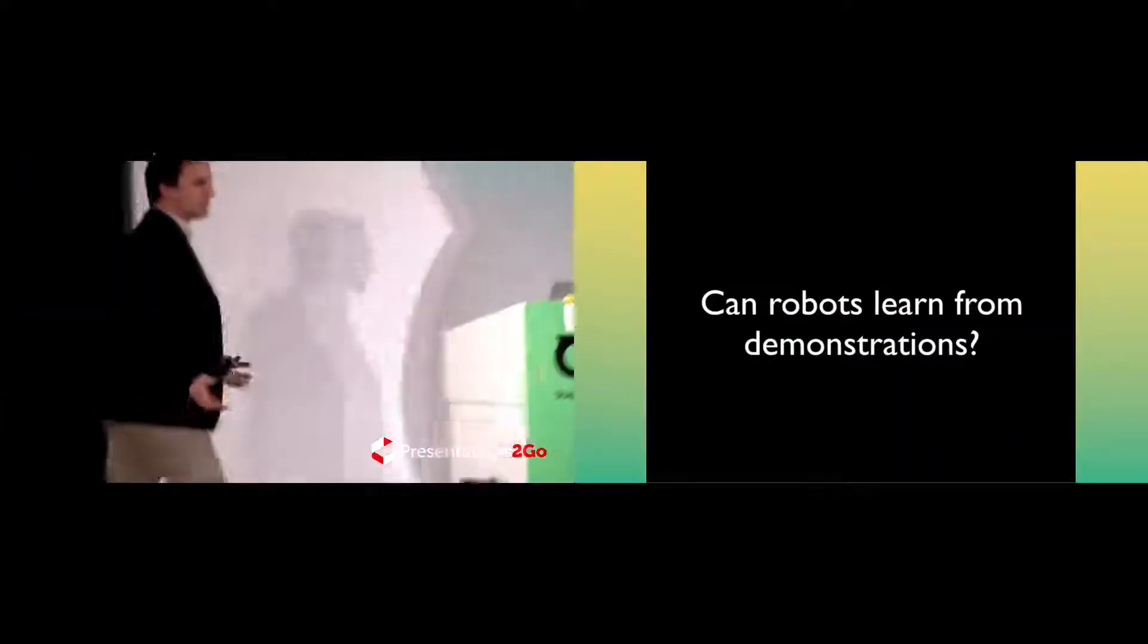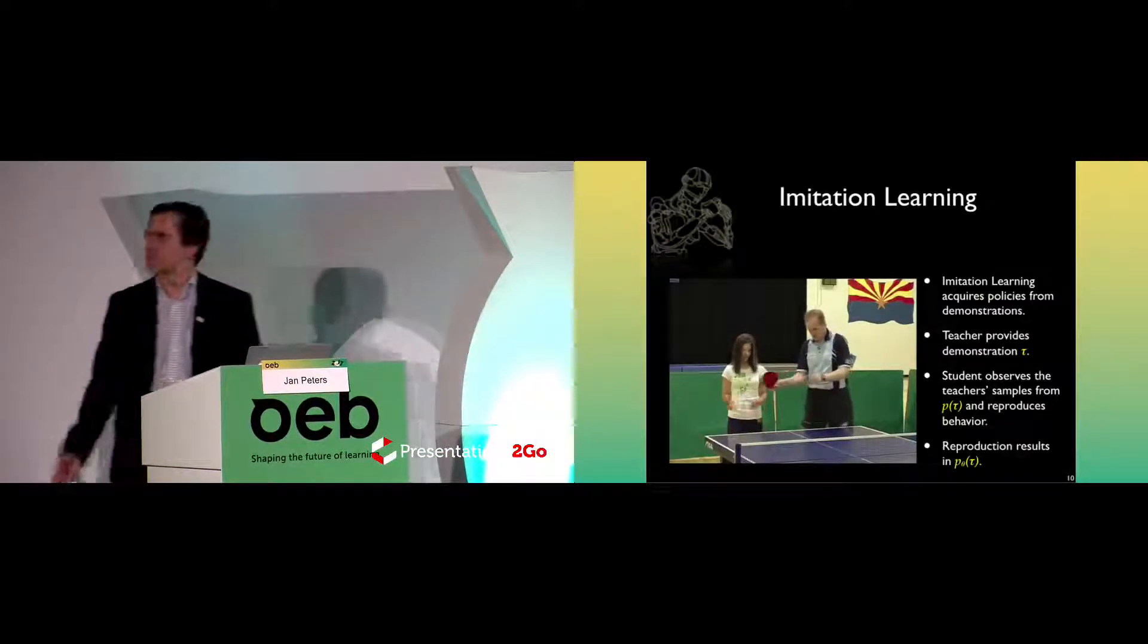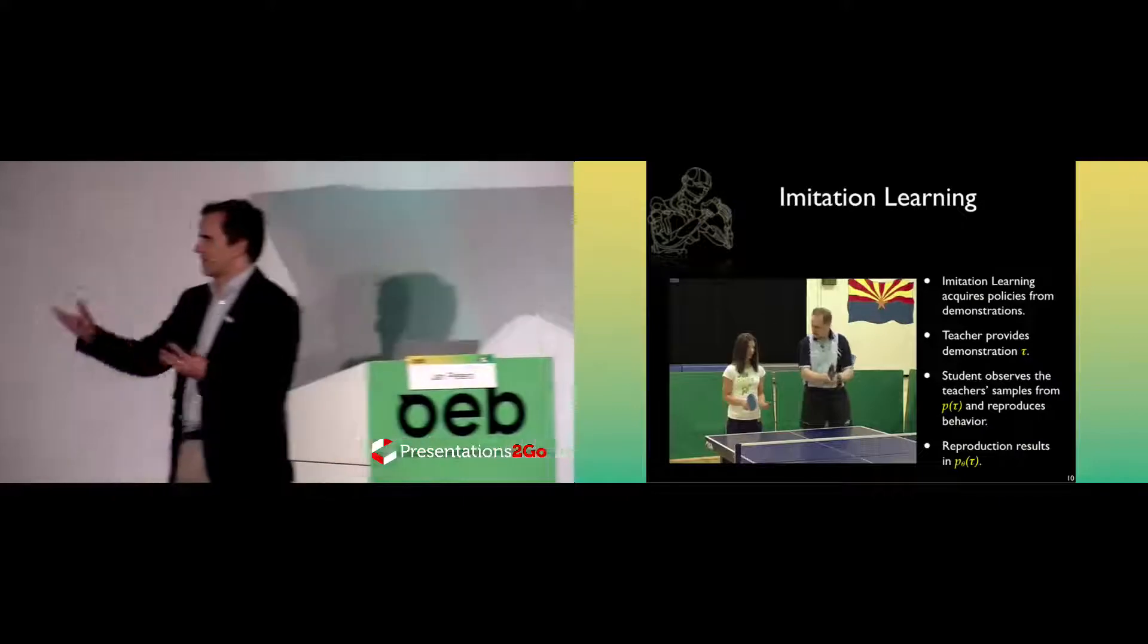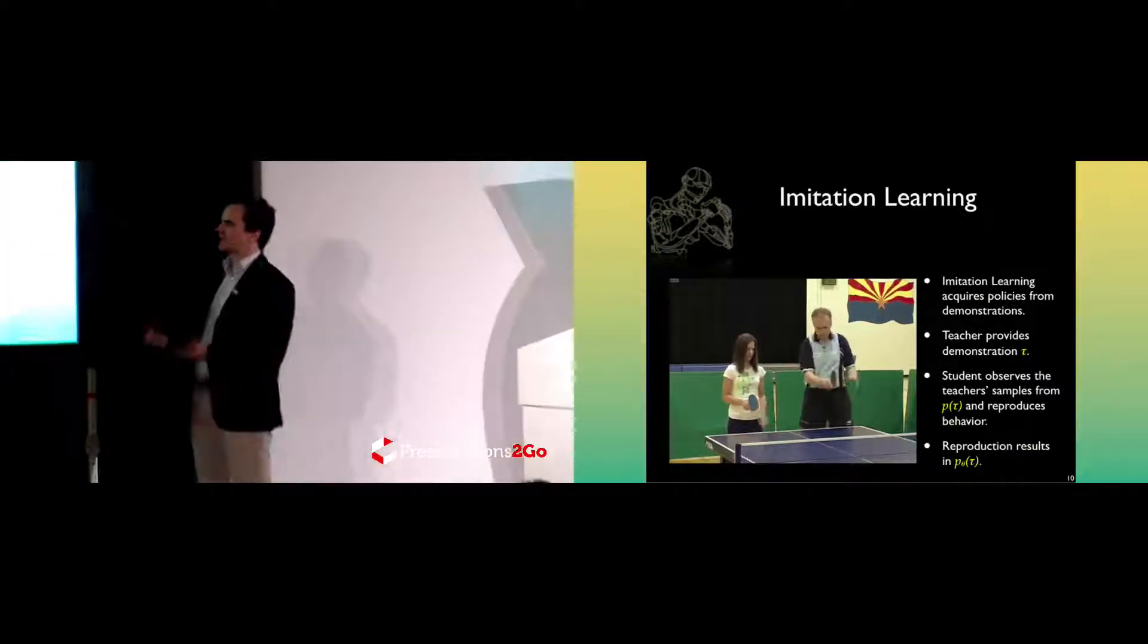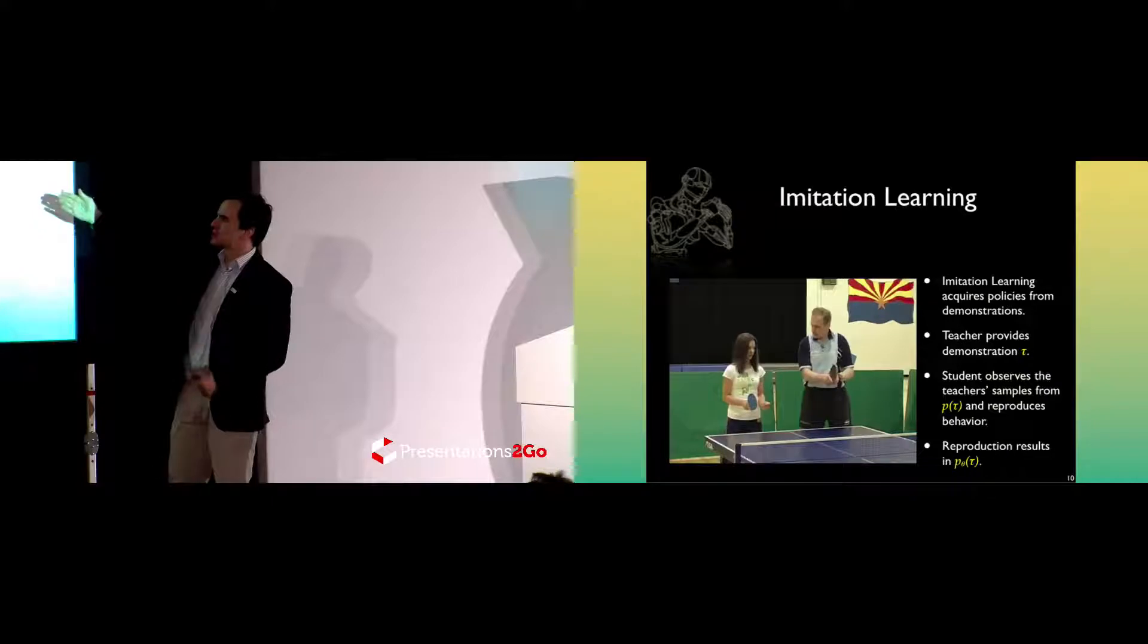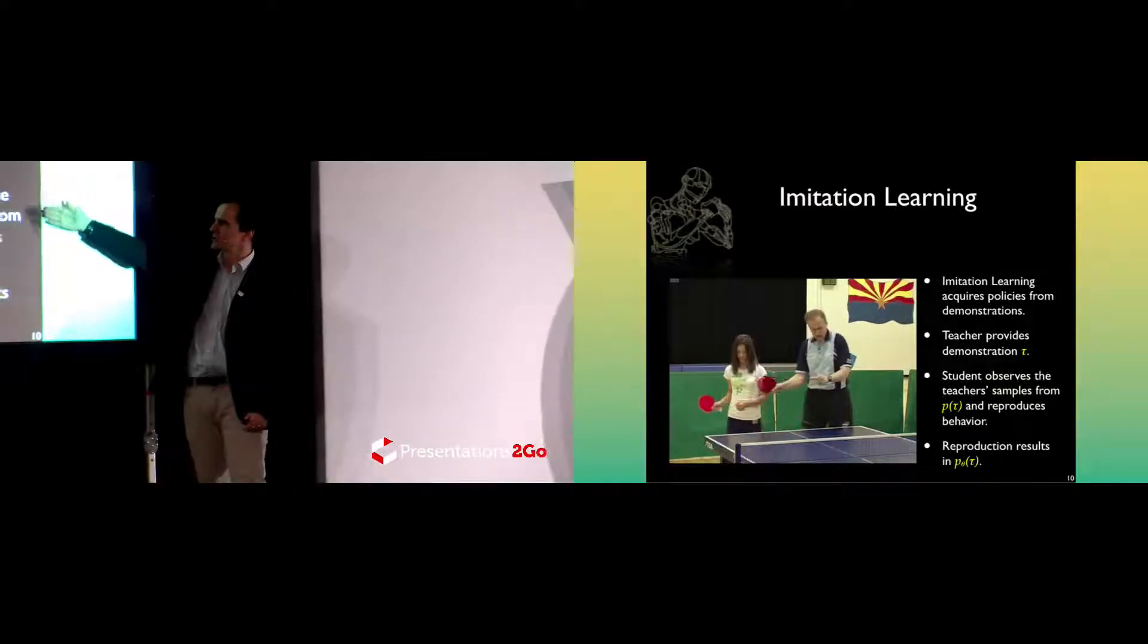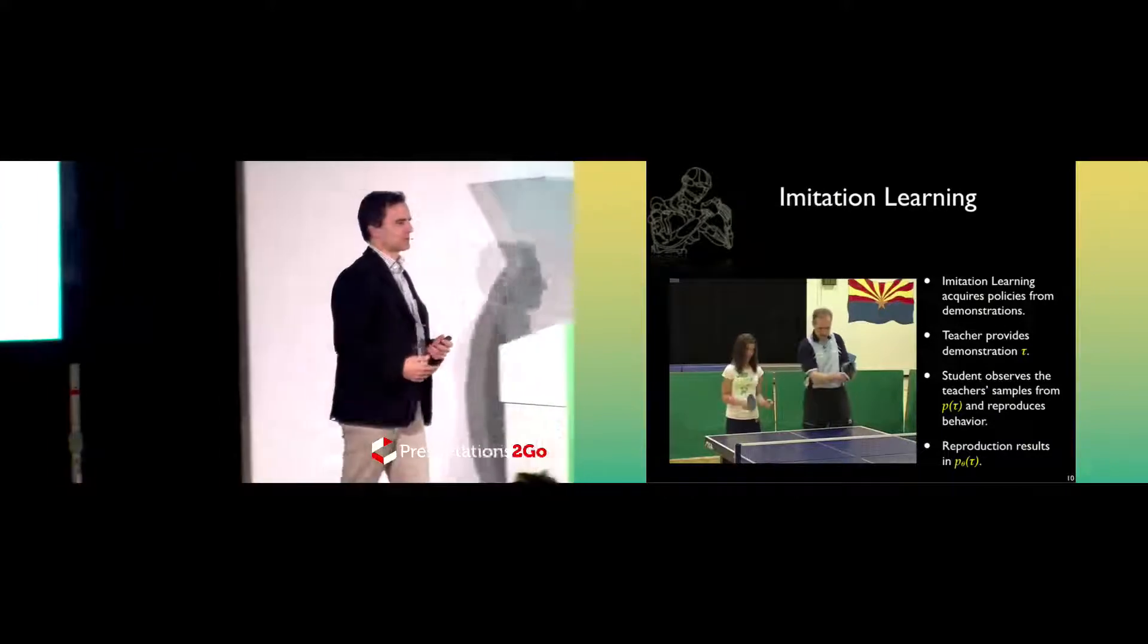Let's first go to the question of how can a robot learn from demonstrations. We should take here a scenario, like a table tennis scenario, where we really want to acquire a behavior, meaning a policy, something which tells us what actions to take in what state, by the teacher showing trajectories or demonstrations, and the student tries to reproduce these as close as possible.